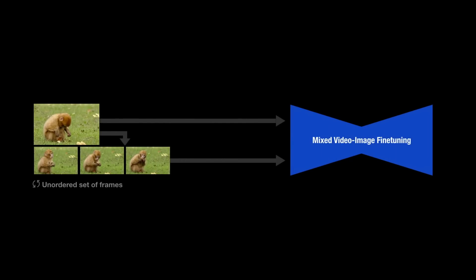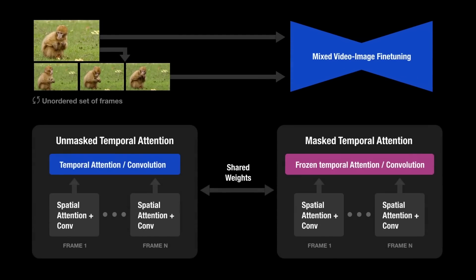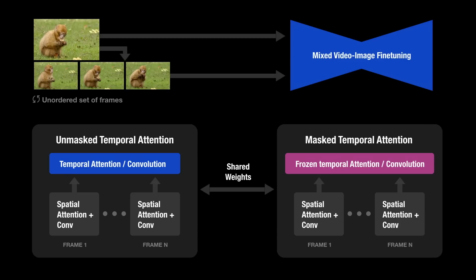The most naive solution is to fine-tune the model on the input video. However, this limits the motion change. Instead, we suggest a mixed objective that also includes fine-tuning on the unordered set of frames of the video. Regular video fine-tuning uses unmasked temporal attention. However, to train on the unordered set of frames, we use masked temporal attention that freezes the temporal attention and convolution.